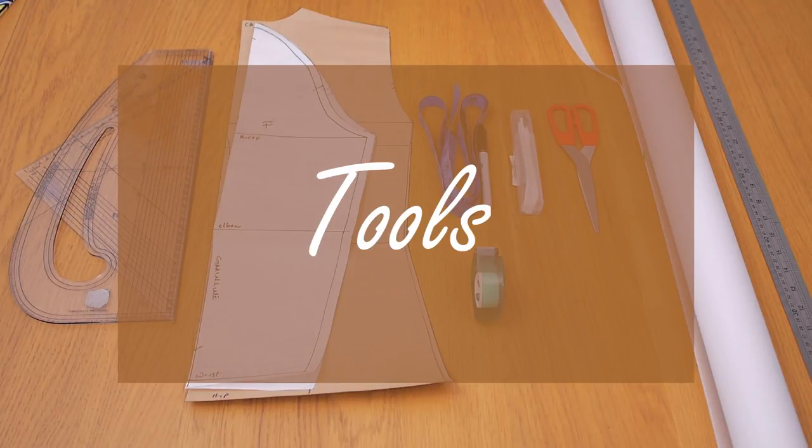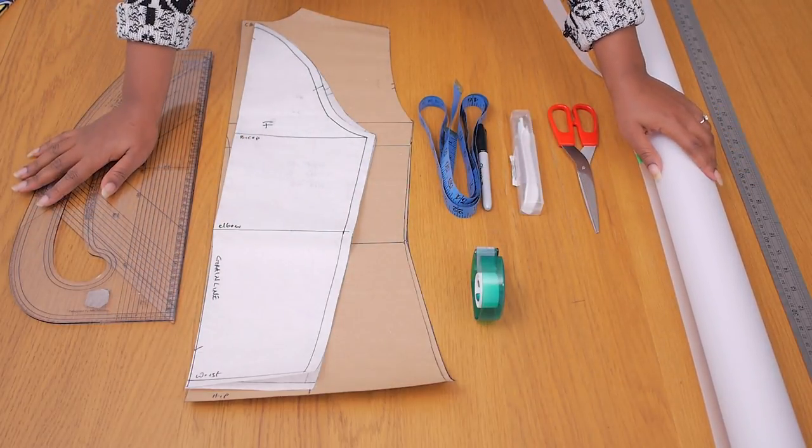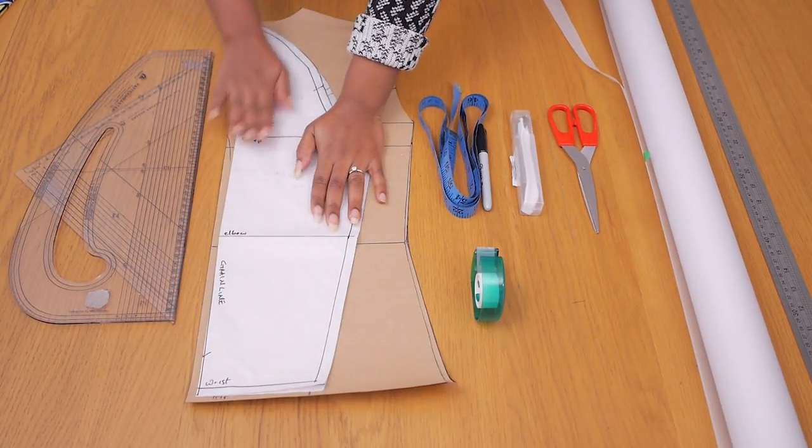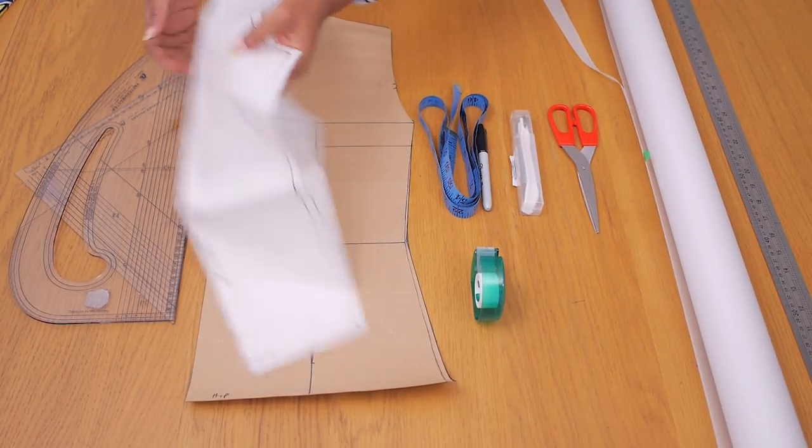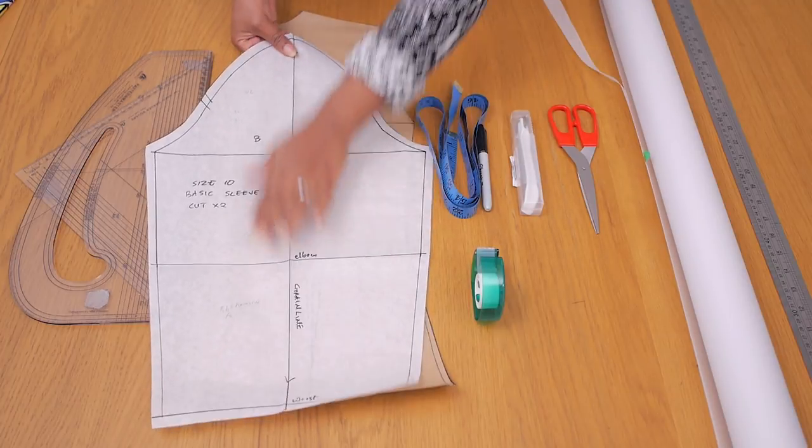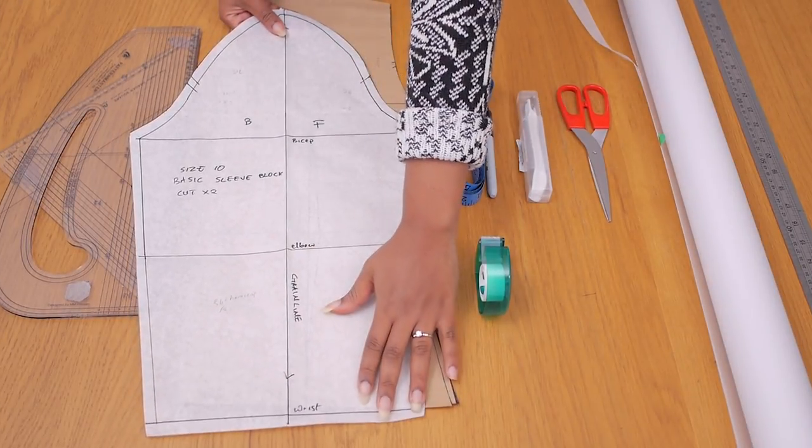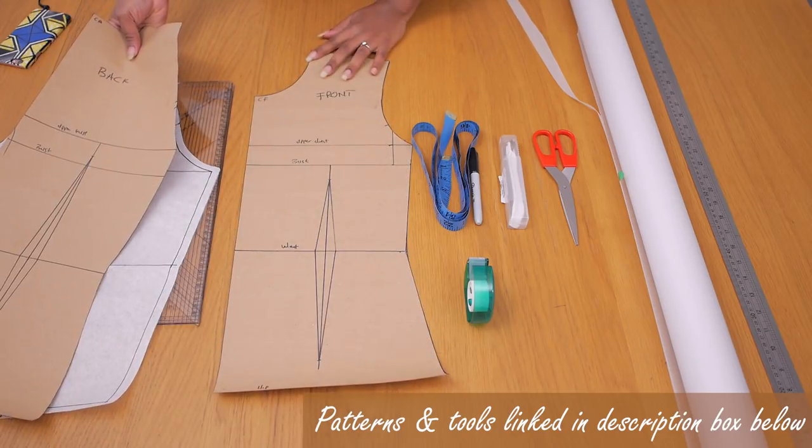For this shirt dress design I'm going to be using the following tools to achieve the patterns. I'm going to be needing my basic sleeve block and I'm going to be changing it up a bit just to take out a lot of ease from the sleeve head. I'm also going to be needing my front and back basic bodice.